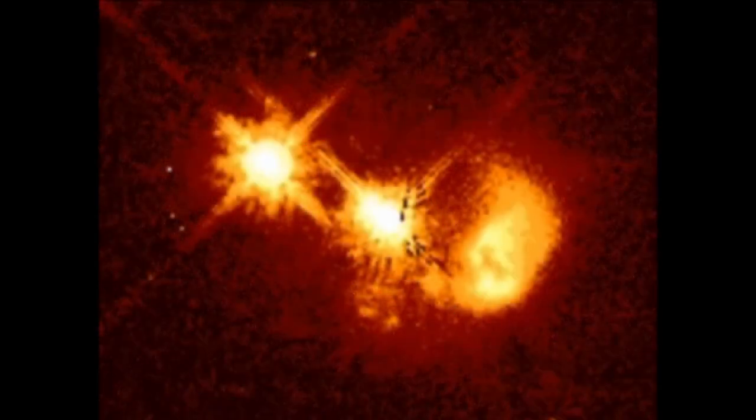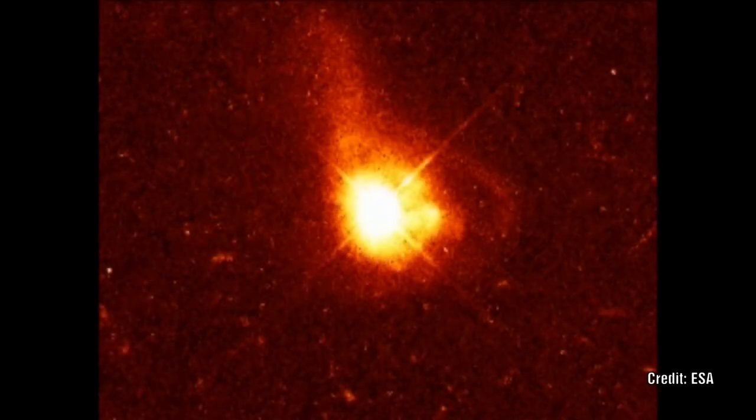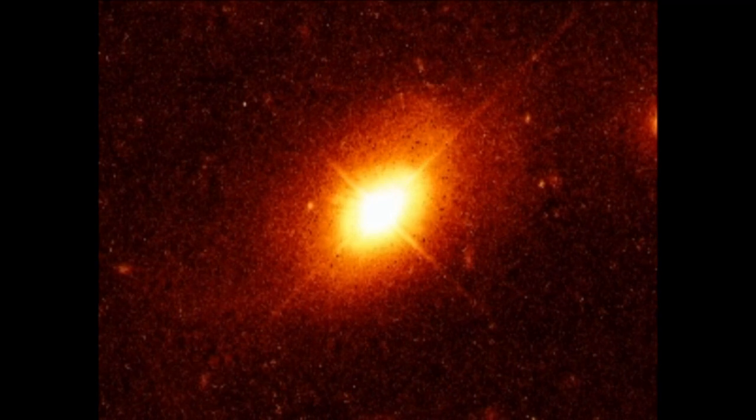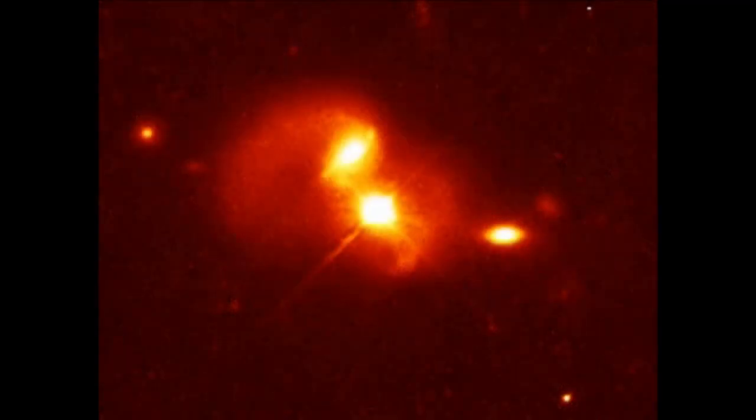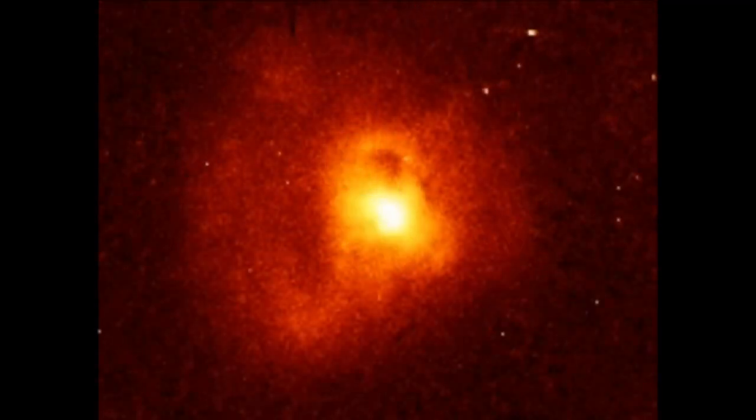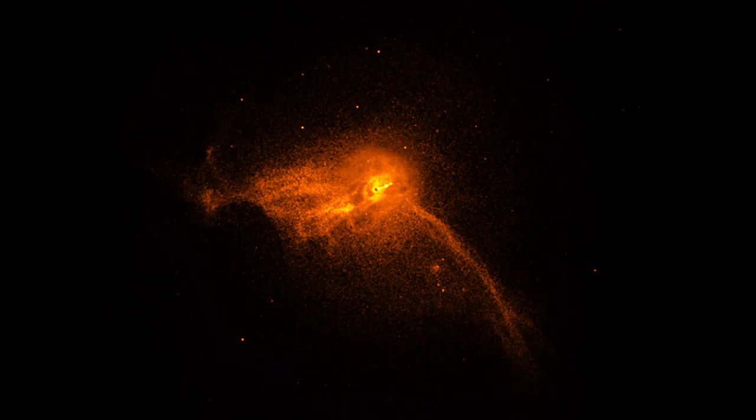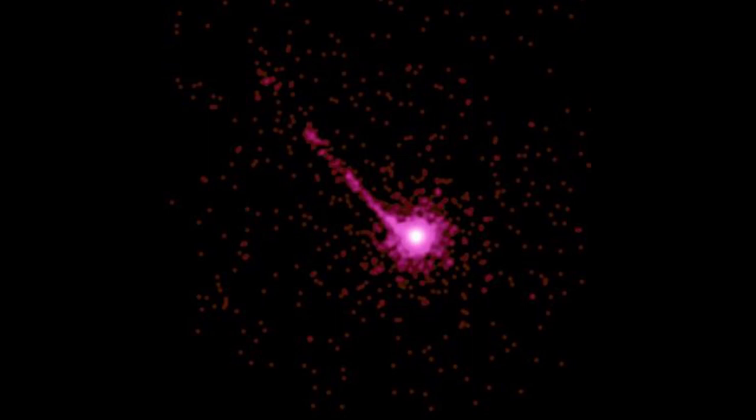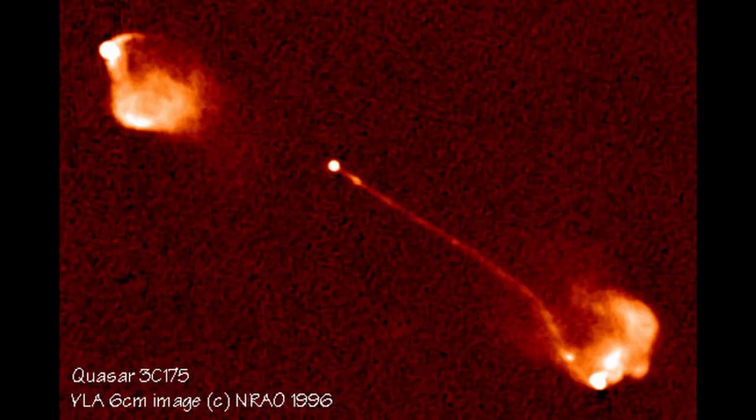Quasars were first noticed as objects which have high luminosity and at the same time an extremely high redshift. In recent years we have been able to observe long jets extending outwards from some of these objects. Current thinking would describe quasars as old relics from an early universe.